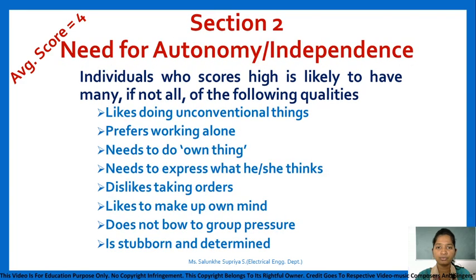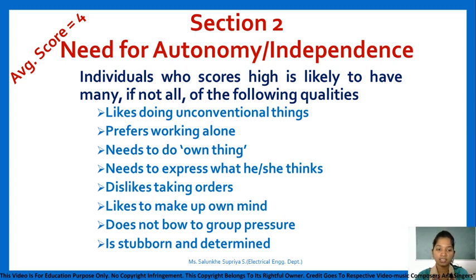Section 2 is related to need for autonomy or independence. An individual who scores high in this section likes doing unconventional things, prefers working alone, needs to do their own thing, needs to express what they think, dislikes taking orders, likes to make up their own mind, does not give in to group pressure, and is stubborn and determined.